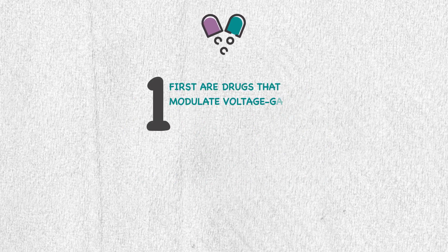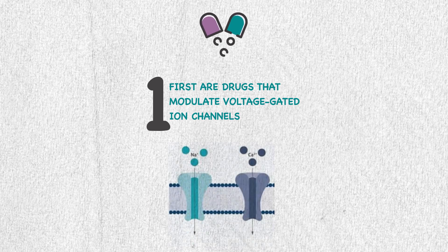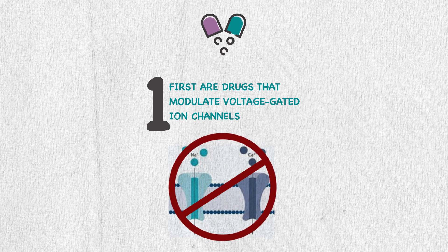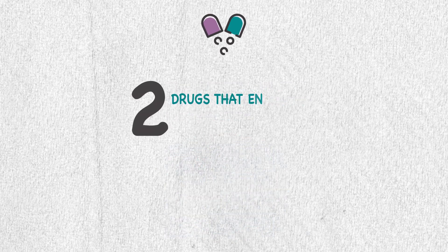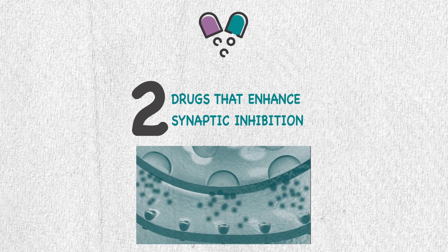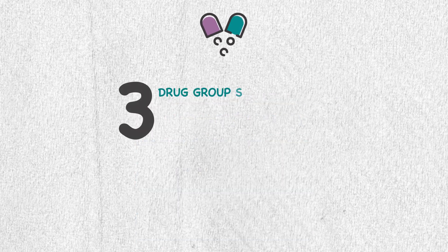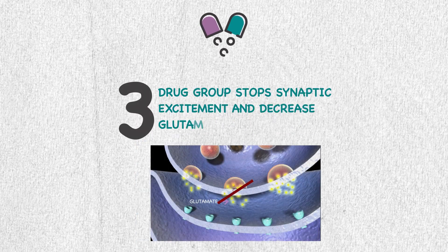Drugs that treat epilepsy can be divided into three types by mechanism of action. First, drugs that modulate voltage-gated ion channels — targeting and inhibiting sodium and calcium channels. Second, drugs that enhance synaptic inhibition by increasing GABA activity, enhancing its release, and preventing its degradation. Third, drugs that stop synaptic excitation and decrease glutamate activity.